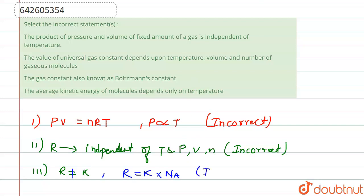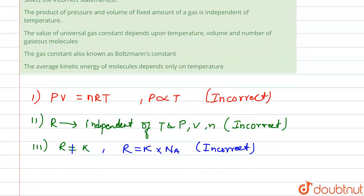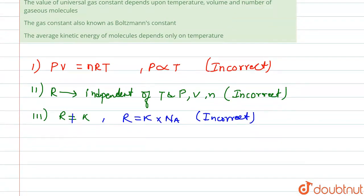So this statement is also incorrect. Moving further for our statement 4, which is saying that average kinetic energy of molecule depends only on temperature. So our first statement is saying KE average equals 3/2 RT.